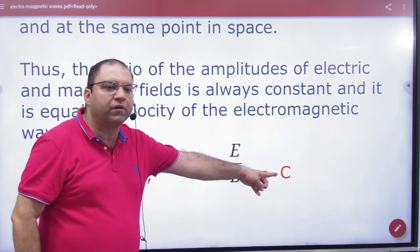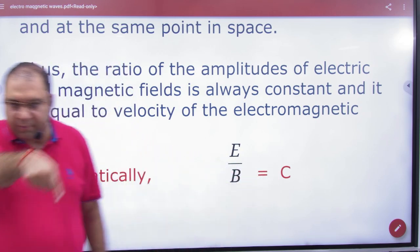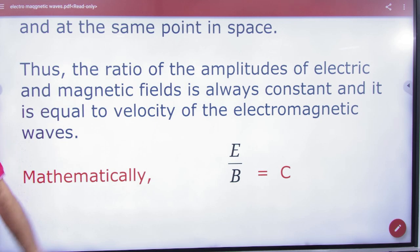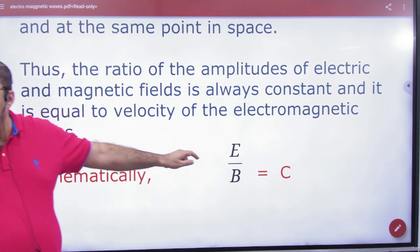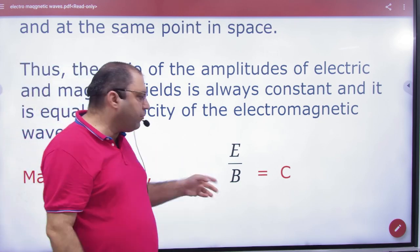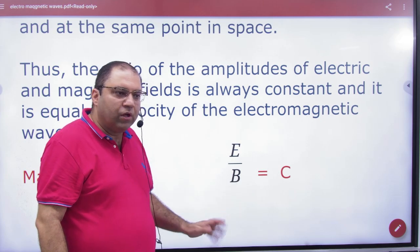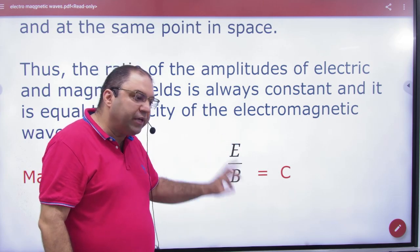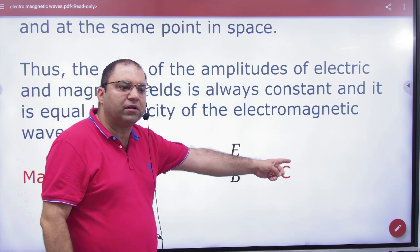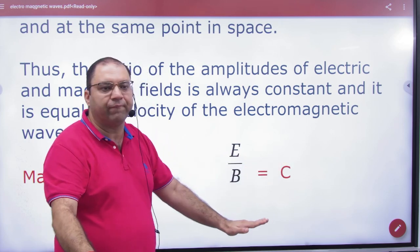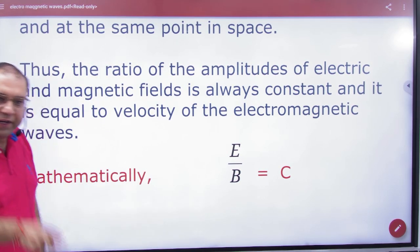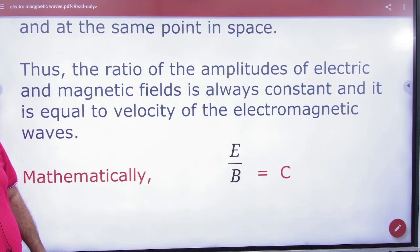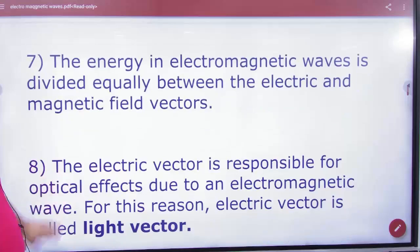This will give the speed of EM waves. C is equal to E by B. So the instantaneous E change is going to happen. If E is at maximum, B will be at maximum. So the ratio remains the same. Clear here. So E and B, the ratio C equals E by B.